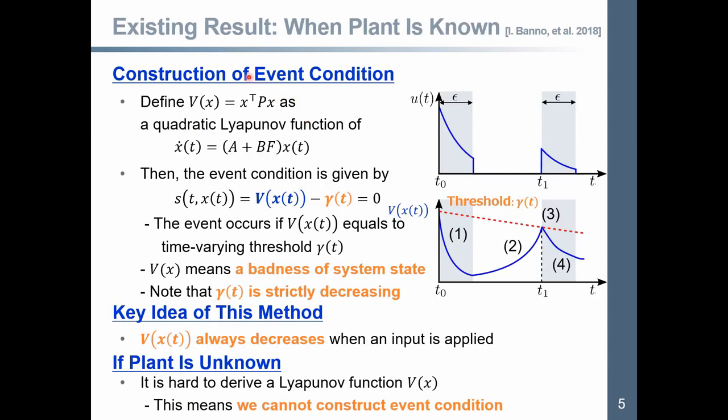As a preliminary, let us review the existing results in which it is assumed that plant model is available. In this method, event condition is constructed as follows. Define Vx as the quadratic Lyapunov function of this system. Then, the event condition is given by this. That is, the event occurs if Vx t equals the time-varying threshold, gamma t.